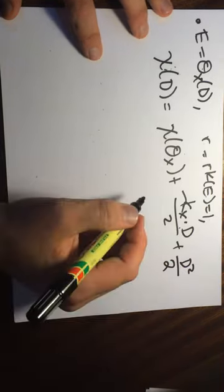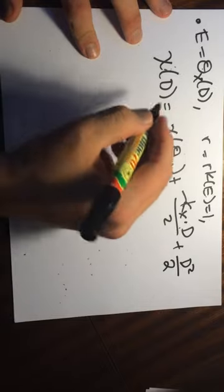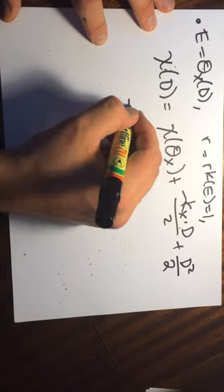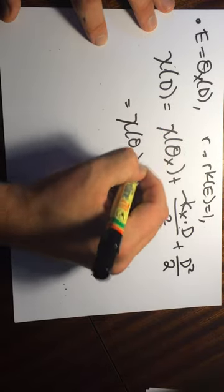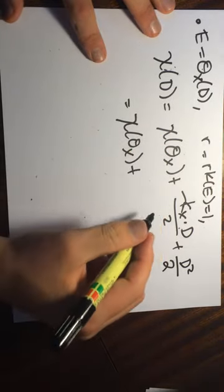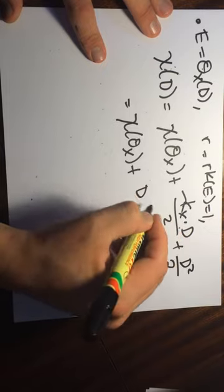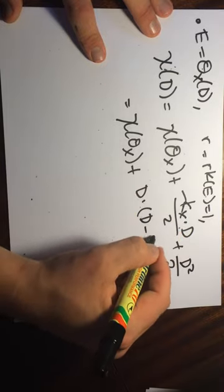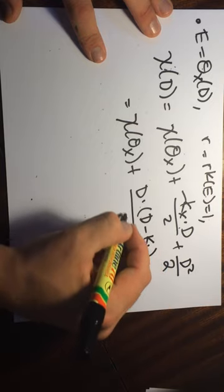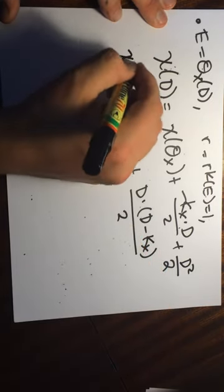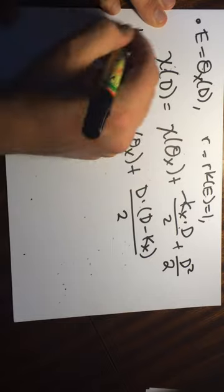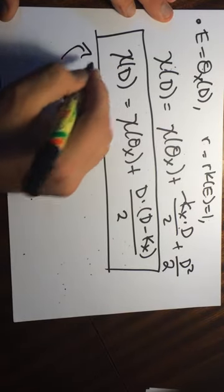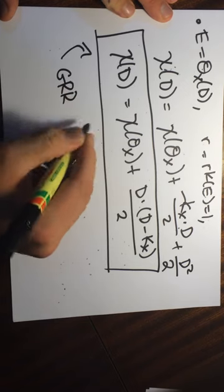So then this tells us that we have, this is equal to chi of O of X plus D times D minus K of X divided by 2. And this is kind of the familiar formula here that people know and love. So this thing here is the Grothendieck Riemann-Roch for surfaces.